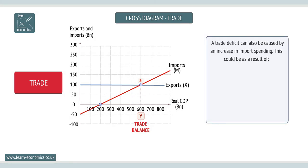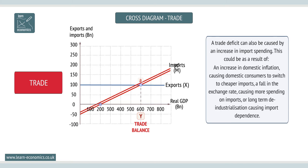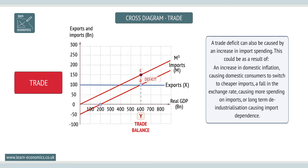Trade deficits can also occur as a result of increases in the value of import spending, which could be a result of an increase in domestic inflation causing consumers to switch to imports, a fall in the exchange rate causing more spending on imports, or long-term de-industrialization causing import dependence.